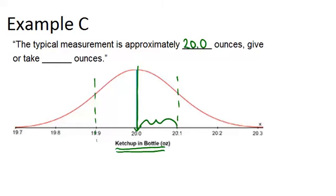There's only a difference of 0.1 ounces in each case. So that means that most bottles of ketchup have really close to 20 ounces. The standard deviation is only 0.1 ounces. And that means that most ketchup bottles have between 19.9 and 20.1 ounces of ketchup in them.